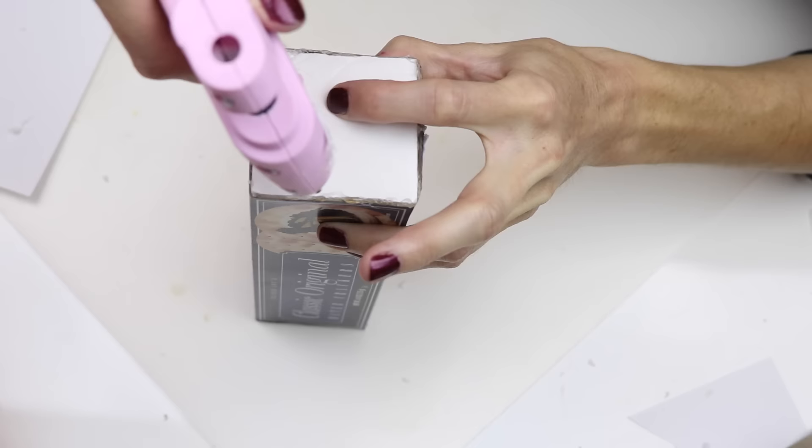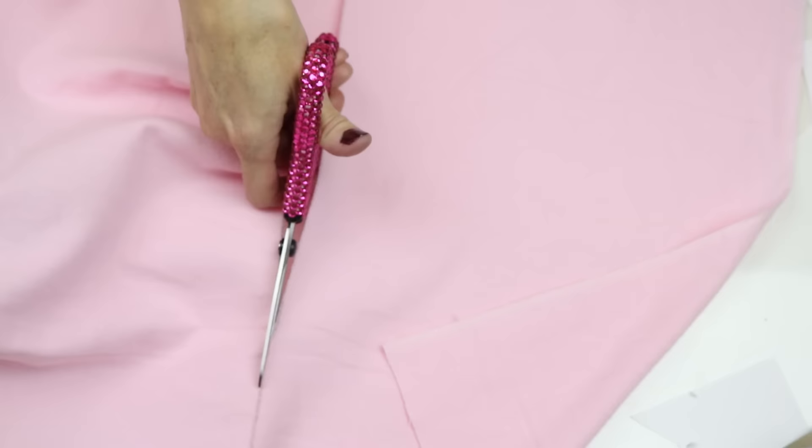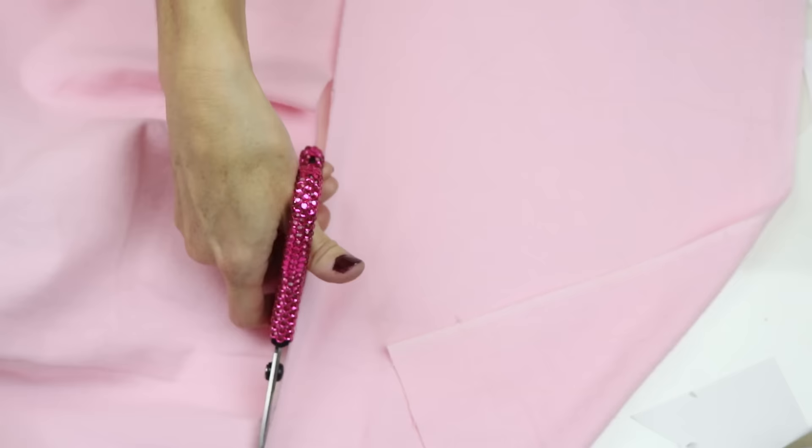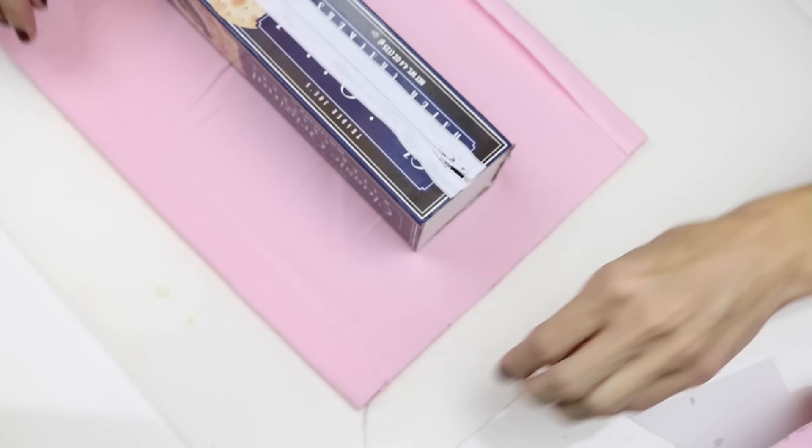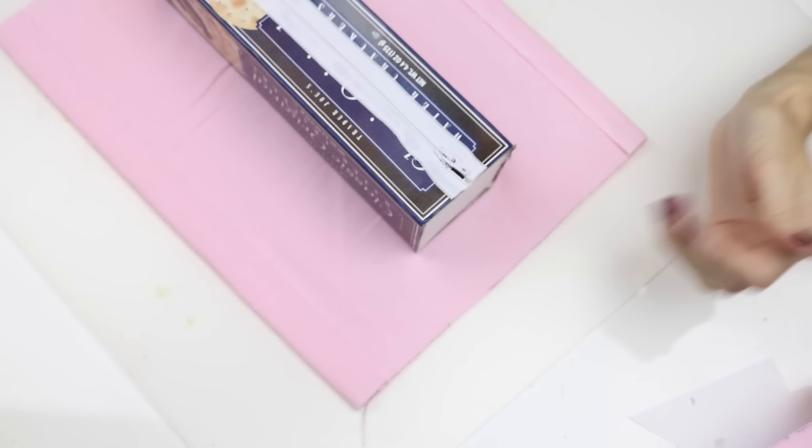Next, I just cut out a piece of pink fabric that was big enough to go around the box. We will be wrapping this box like you would wrap a present. Once I had my desired length, I then folded over the edges to give it a crisp and clean look. When I had them how I liked them, then I just hot glued those down.